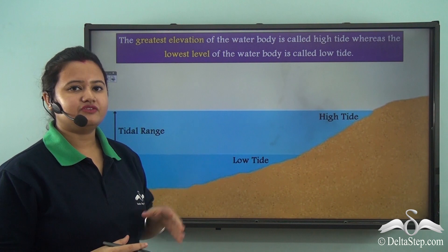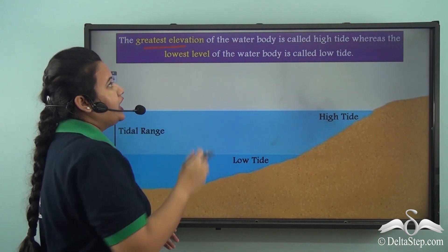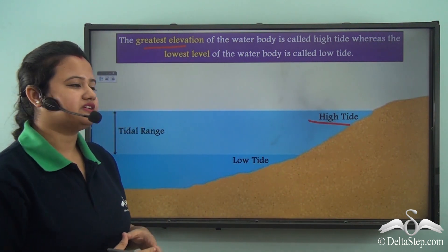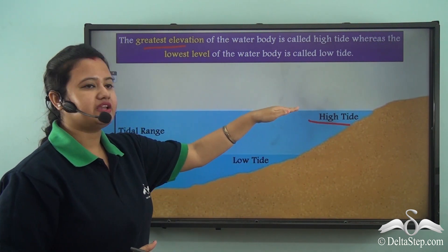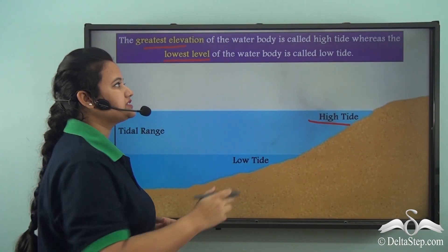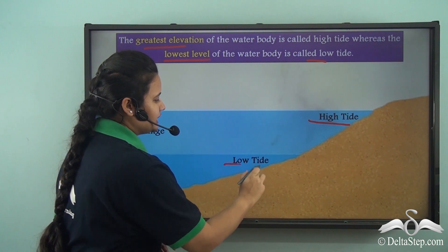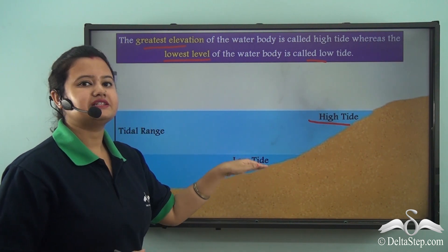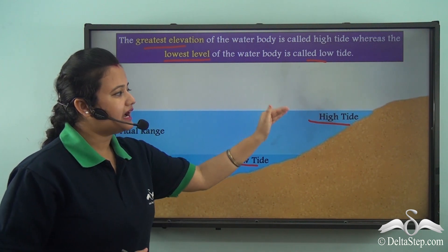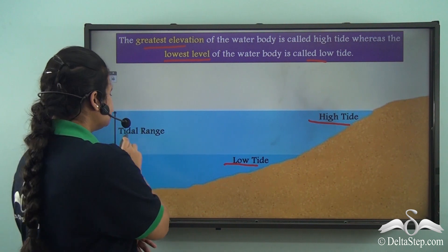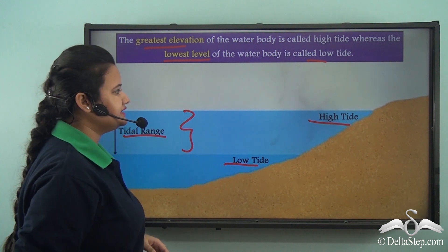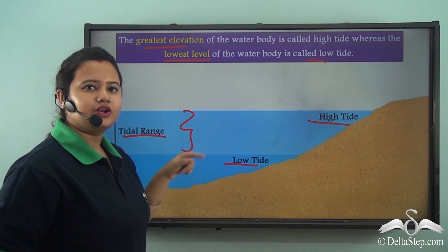The greatest elevation of a water body observed during a tide is known as a high tide, which refers to the maximum height of a water body. Conversely, the lowest level of a water body is called low tide, referring to the minimum level a water body acquires. The difference between the height of high tide and that of low tide is known as tidal range.